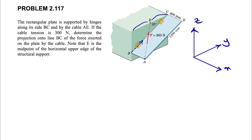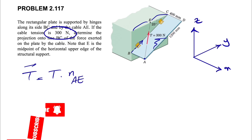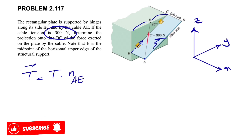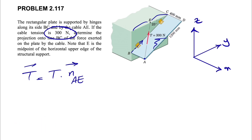First, we know that the tension in cable A is 300 newtons. Let's find the tension in vector form. If we call it T, what we need to find is first the magnitude, which from the question we know is 300 newtons, and the other thing we need is the unit vector. Our unit vector here is from A to E, which we call n_AE, and that would be in vector form too.